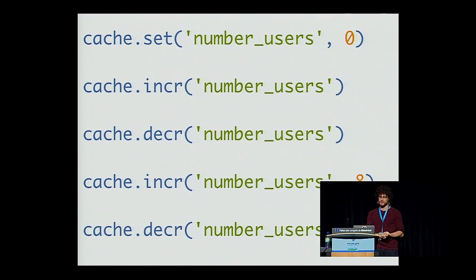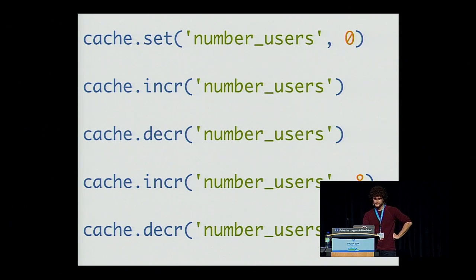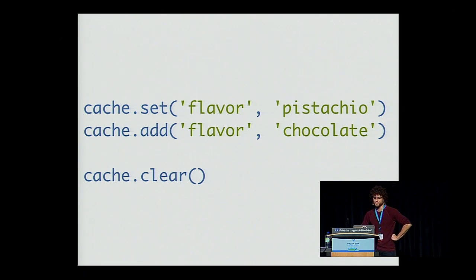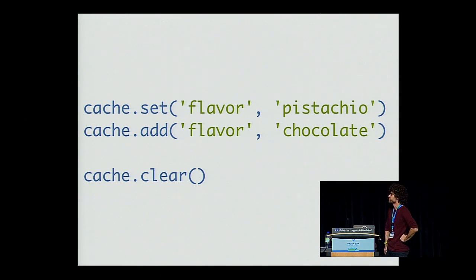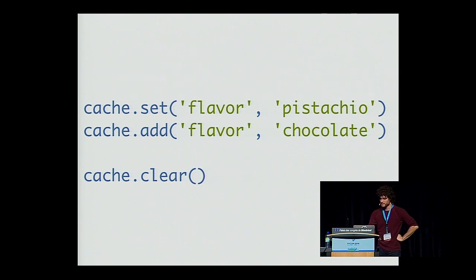You also get counter operations where you can increment or decrement values. By default they increment and decrement by one, but you can pass any arbitrary number. There's also the `add` method, which only adds a key in the cache if it's not already there. So `cache.set('flavor', 'pistachio')` sets the flavor key, but `cache.add('flavor', 'chocolate')` will not overwrite it, because `add` only works if the key does not exist. And `cache.clear` flushes your entire cache.